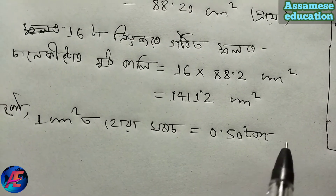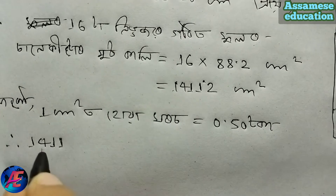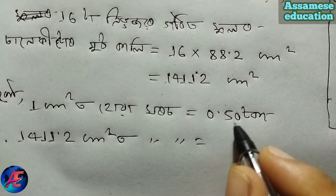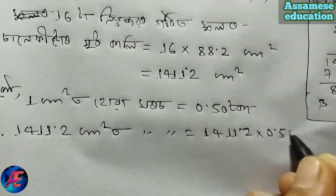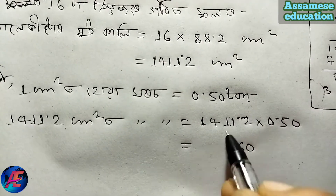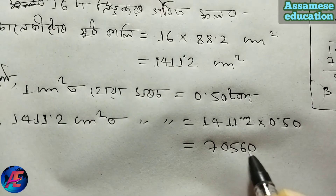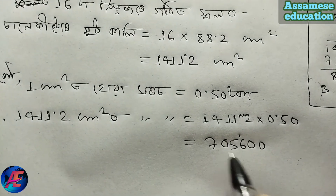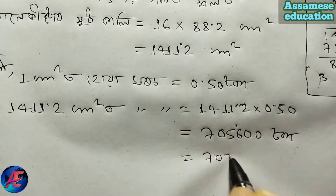So the total area is 1411.2 cm². Now multiply 1411.2 into 0.50. Five times five is 25, carry. Five times 200 = 1000. So the result is 70560, and placing the decimal gives 705.6 toka. So 705.6 toka is the answer.